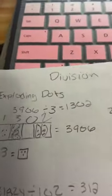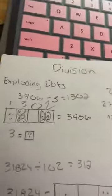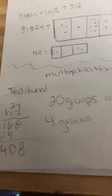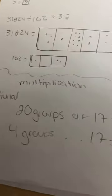I have exploding dots for division and multiplication. I have the traditional way, and then I did 20 groups of 17 equals 340, four groups of 17 equals 68.